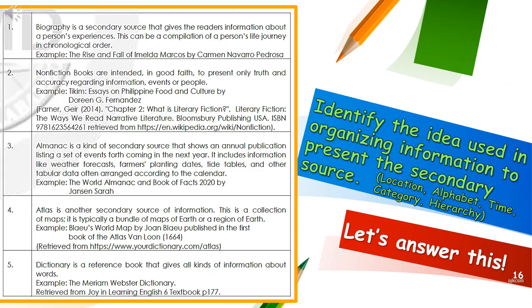Let's answer this. Identify the idea used in organizing information to present the secondary source. Number one: a biography is a secondary source that gives readers information about a person's experiences. This can be a compilation of a person's life journey in chronological order — is it location, alphabet, time, category, or hierarchy? Number two: non-fiction books are intended, in good faith, to present only truth and accuracy regarding information, events, or people — is it location, alphabet, time, category, or hierarchy?